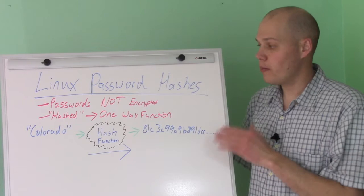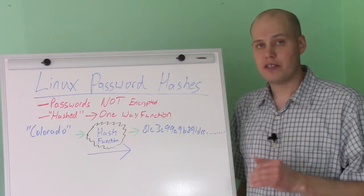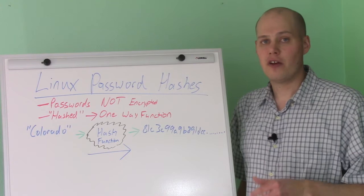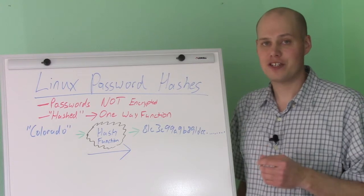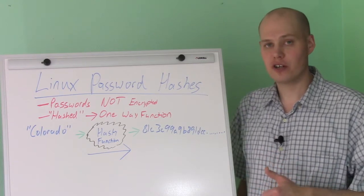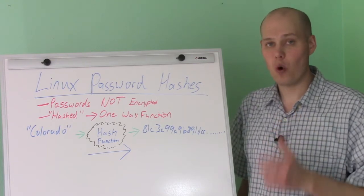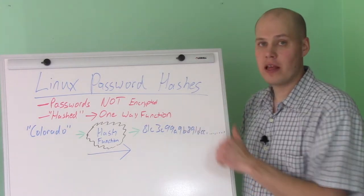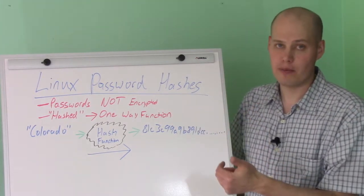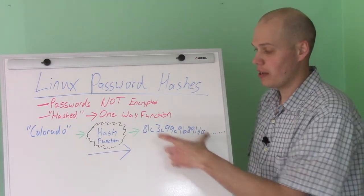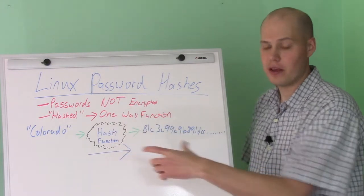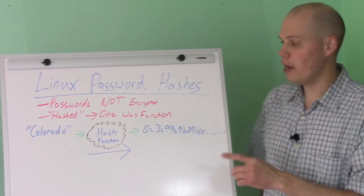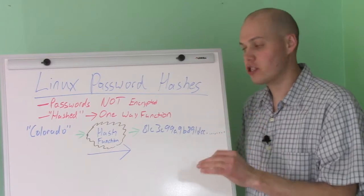To get terminology right, the first thing to keep in mind is that passwords are not encrypted, technically. They're actually hashed. A hash is a cryptographic function that's one way. Something that's encrypted can be decrypted, while something that's hashed cannot be unhashed — a hash is a one-way function.